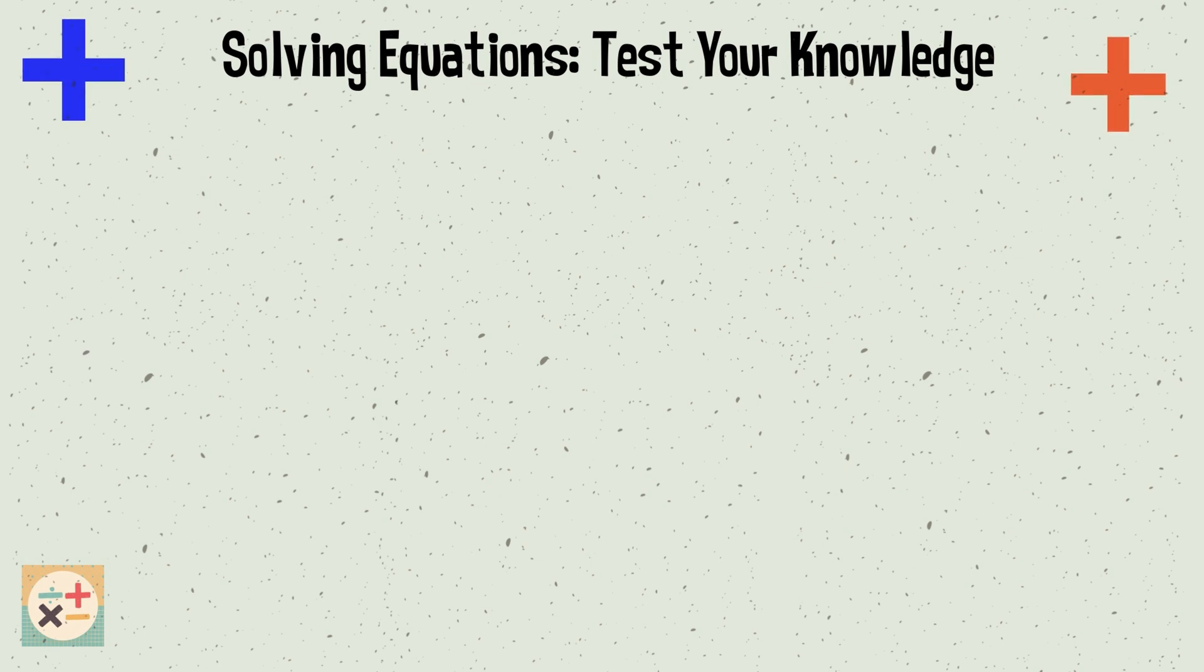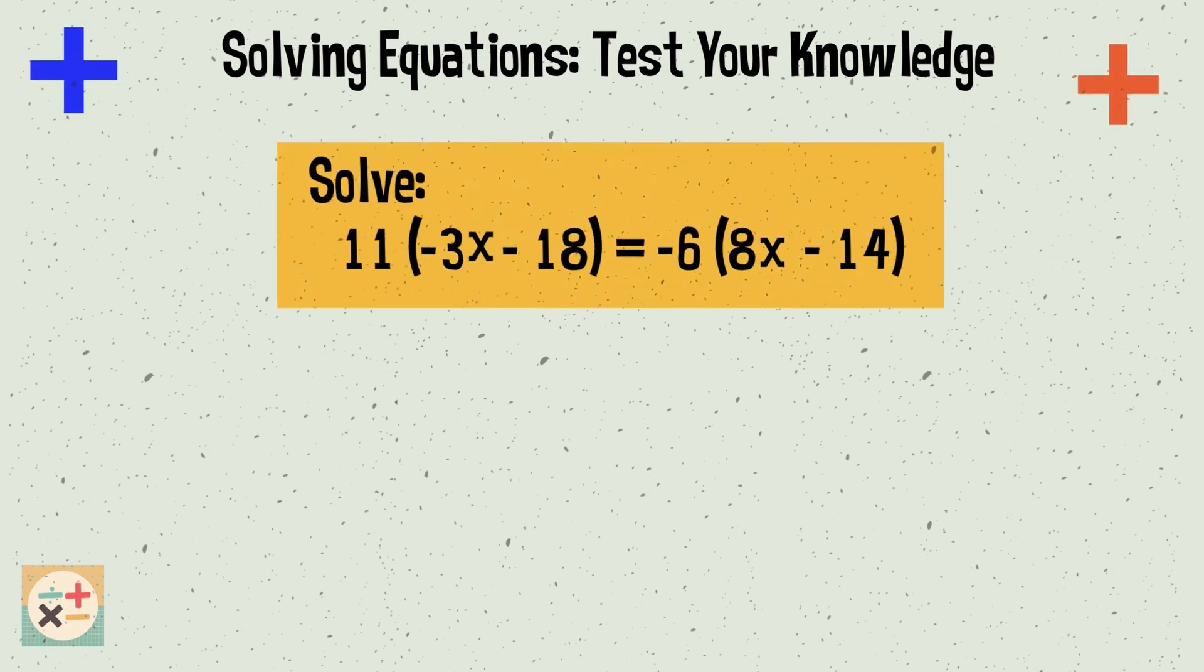Question 8. 11 multiplied by minus 3x minus 8 equals 6 multiplied by 8x minus 14. Find the value of x. x equals 0.8.